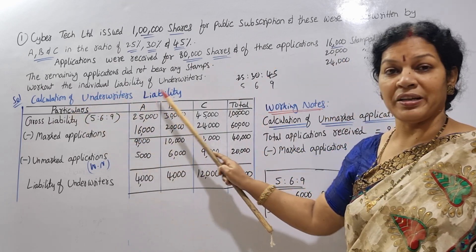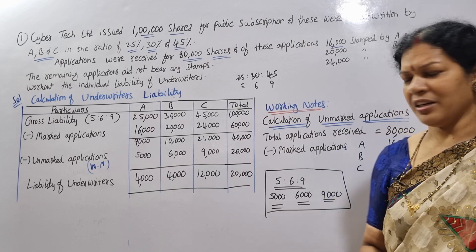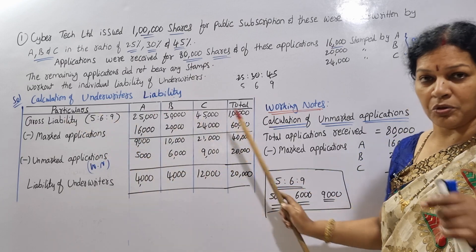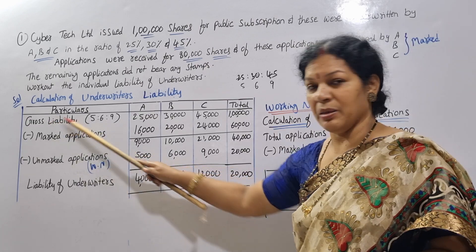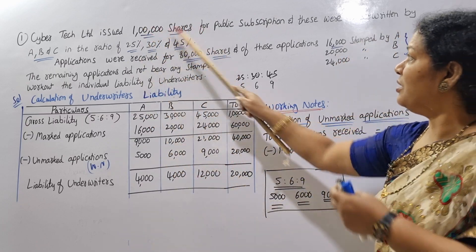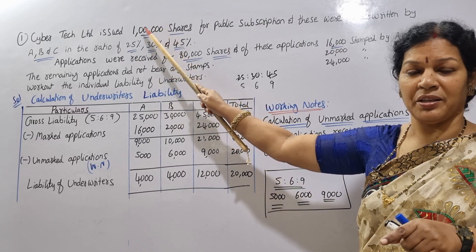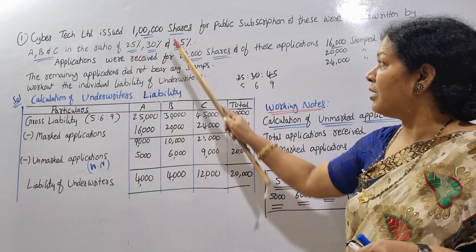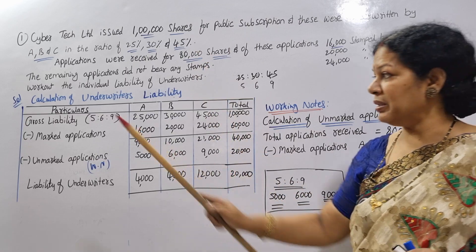The first step is the Calculation of Underwriters' Liability. We set up columns for underwriters A, B, and C, plus a total column. We start with gross liability — how much each underwriter is committed to. Gross liability: 1 lakh × 25% = 25,000 for A; 1 lakh × 30% = 30,000 for B; 1 lakh × 45% = 45,000 for C.